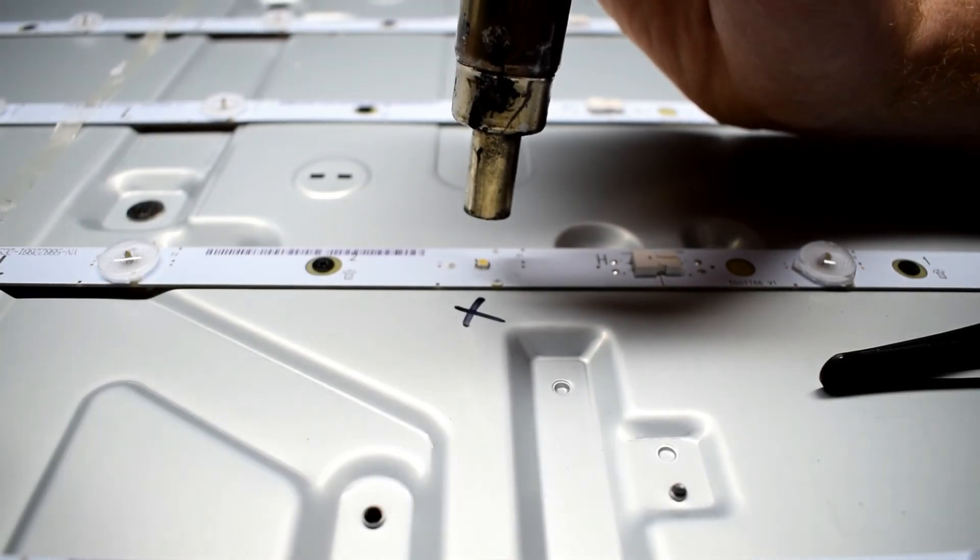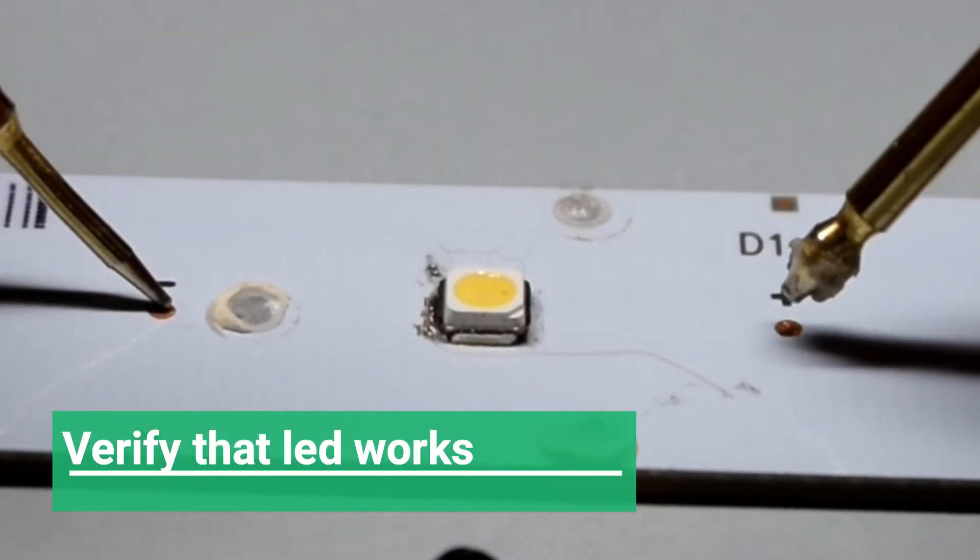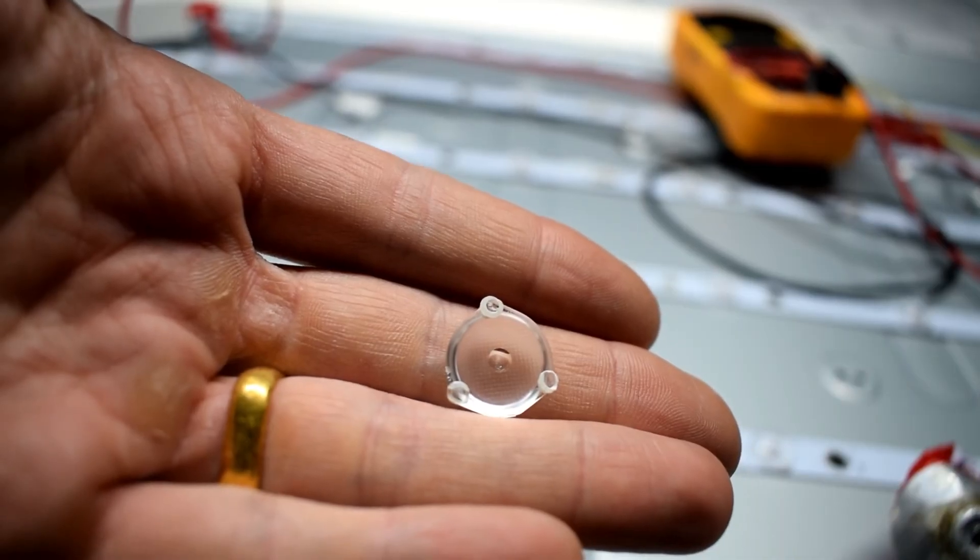Using a heat gun, heat up the LED for about 20 seconds. If you don't have a heat gun, you can also do this with a normal iron. You just have to tack both sides. It's a little bit more tricky though.